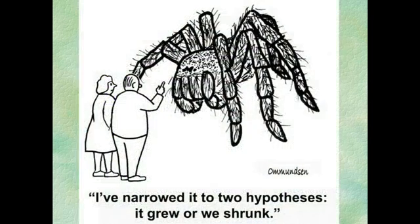Okay, so here's another example of that. We have these two people here who don't look very happy, and they are confronted by a giant spider. The gentleman says, 'I've narrowed it to two hypotheses: either it grew or we shrunk.' I'll leave you with that and let you think of some ways that maybe he could test that hypothesis — how could he find out which one of those it is?